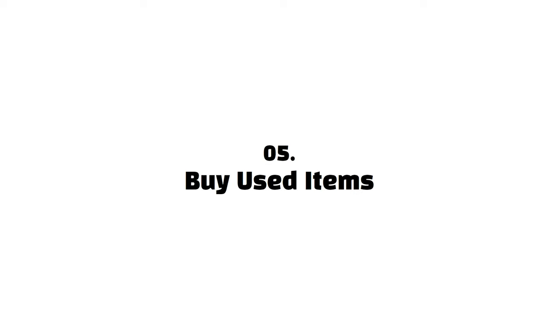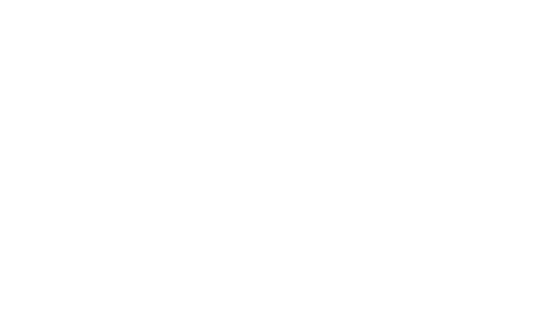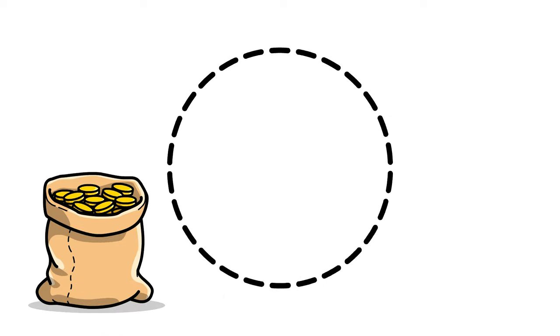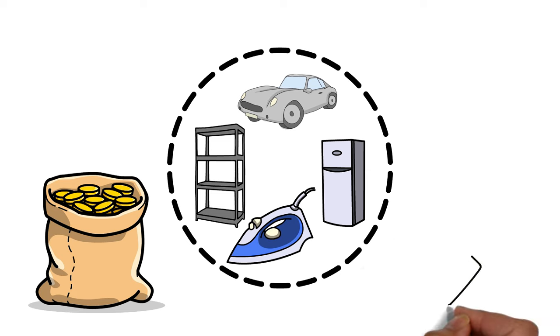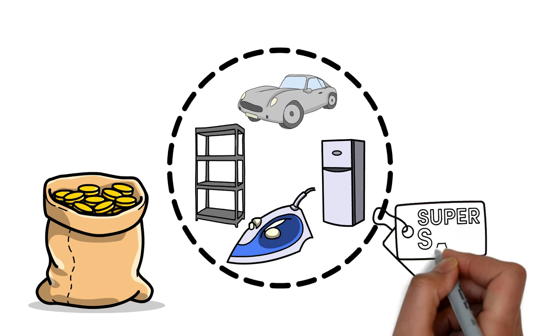Five, buy used items. One of the easiest ways to save cash is to buy used stuff. Whether it's a car, furniture, or a home appliance, anything can be bought for half the price or less if it's fairly used.